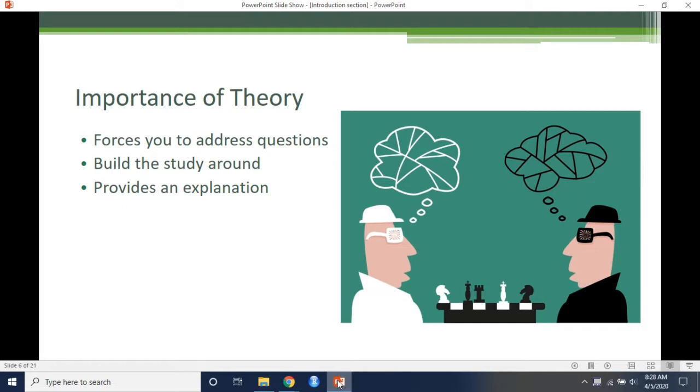By virtue of its applied nature, good theory in the social sciences is of value precisely because it fulfills one primary purpose: to explain the meaning, nature, and challenges of a phenomenon often experienced but unexplained in the world in which we live, so that we may use that knowledge and understanding to act in more informed and effective ways.